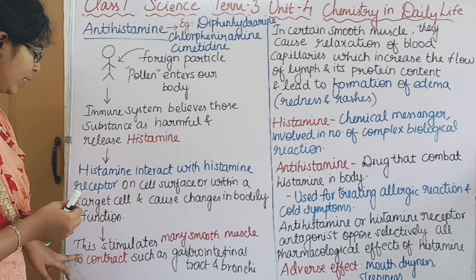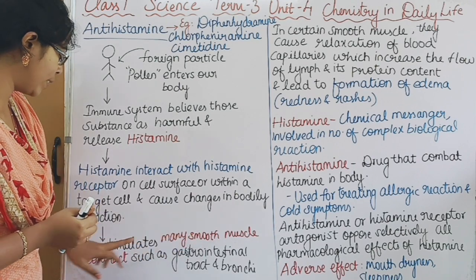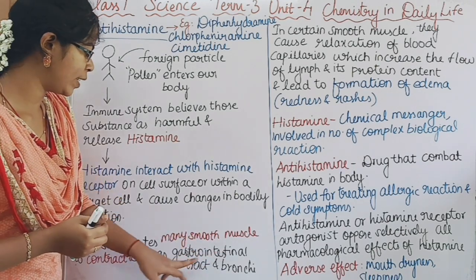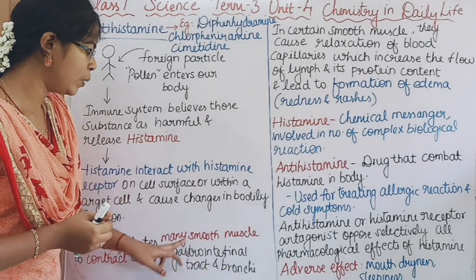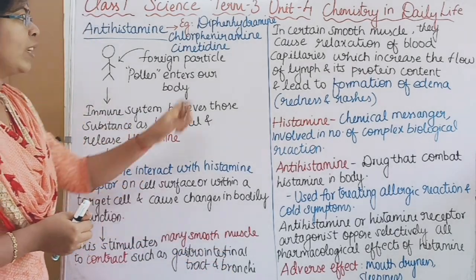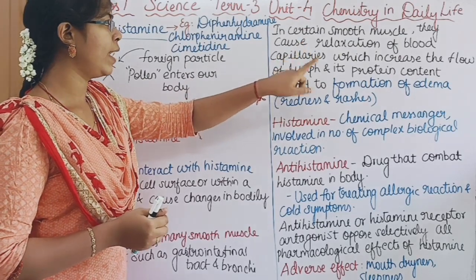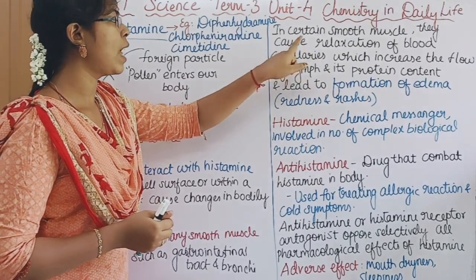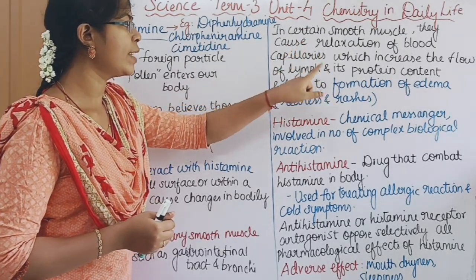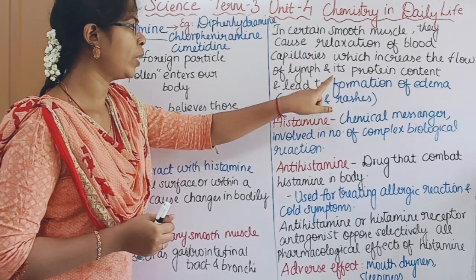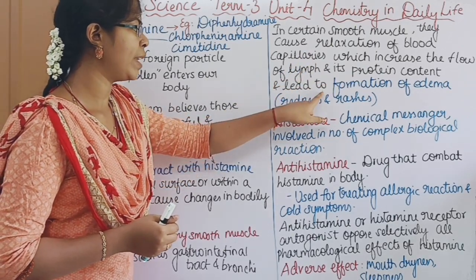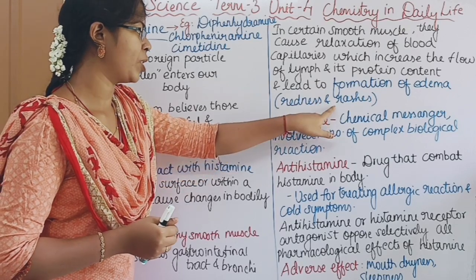Histamine causes changes in bodily function. It stimulates many smooth muscles to contract, such as the gastrointestinal tract and bronchi. In certain smooth muscles, it causes relaxation of the blood capillaries, which increases the flow of lymph and its protein content, leading to the formation of edema, redness, or rashes.